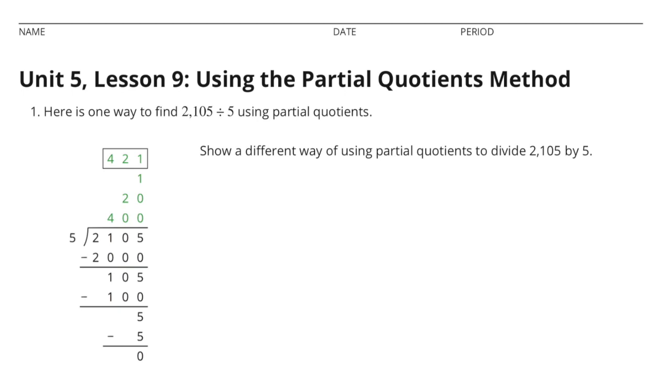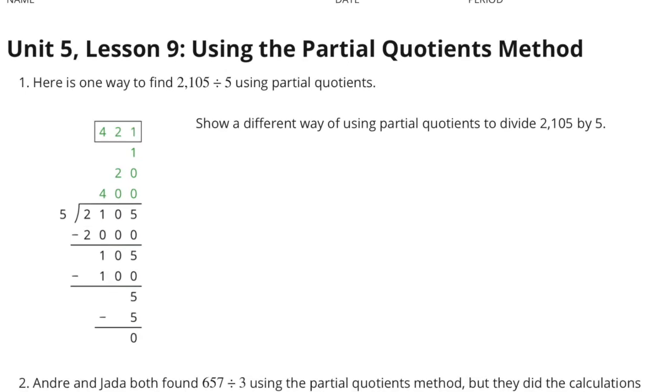Unit 5 Lesson 9: Using the Partial Quotients Method. Number 1. Here is one way to find 2,105 divided by 5 using partial quotients. Show a different way of using partial quotients to divide 2,105 by 5.